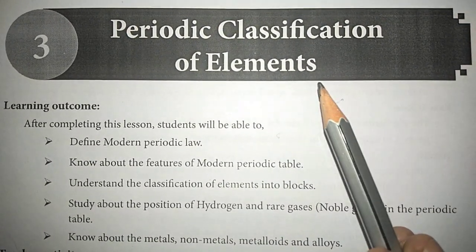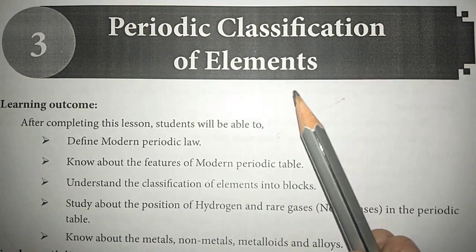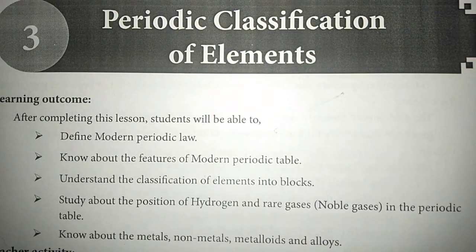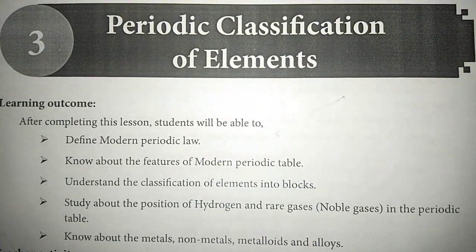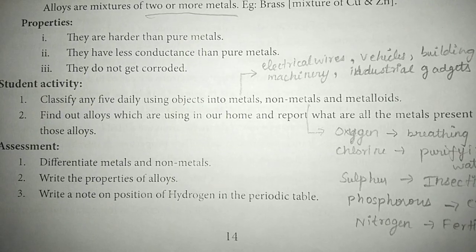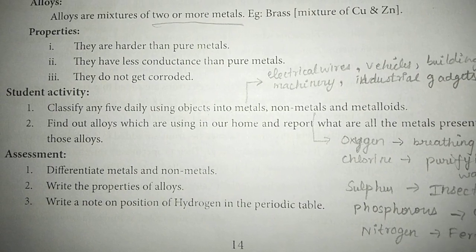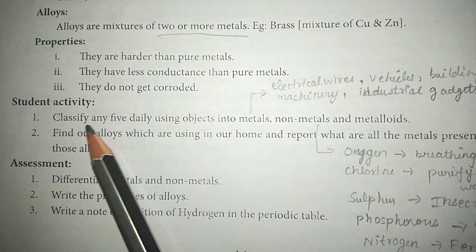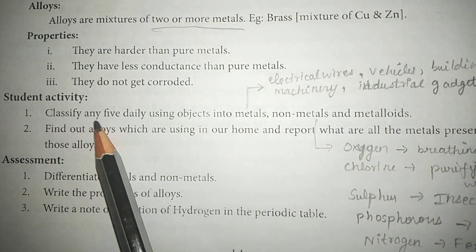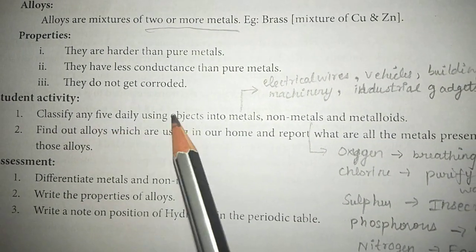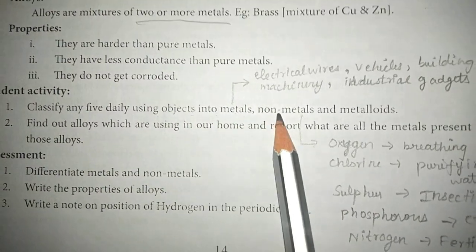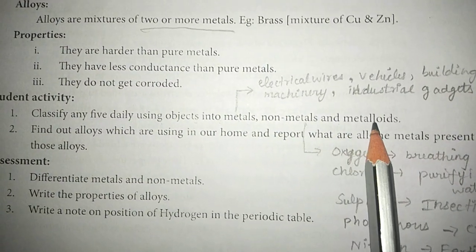In this lesson, we will answer the student activity and the assessment. First student activity, first question: classify any five daily-use objects into metals, non-metals, and metalloids.